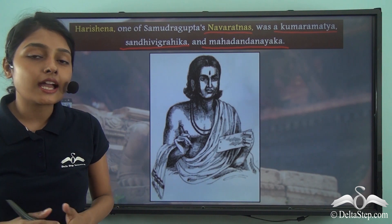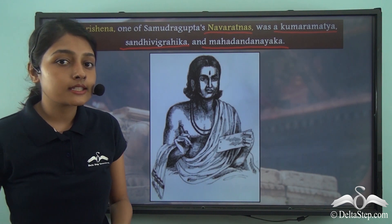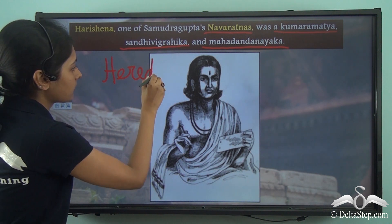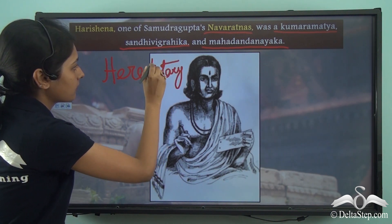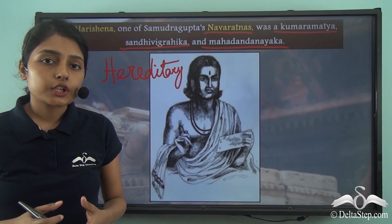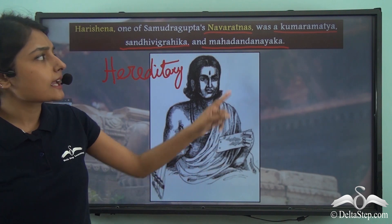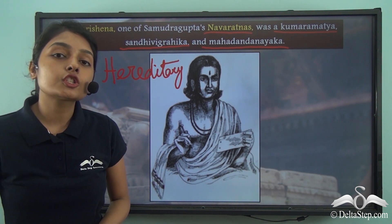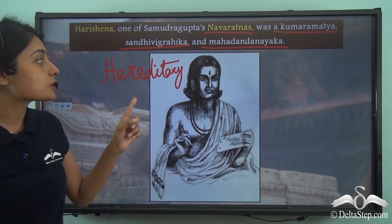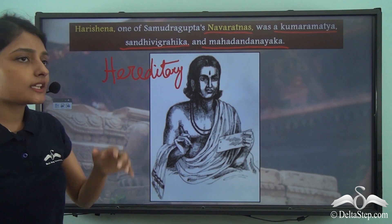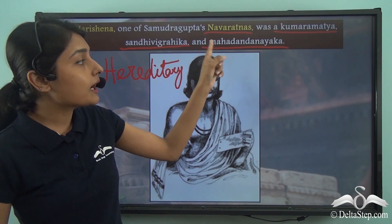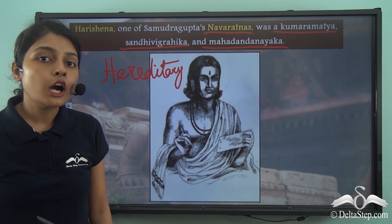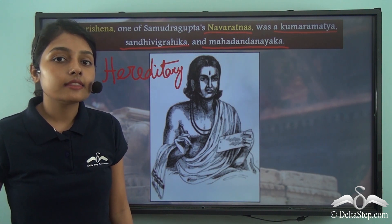An important point to note is that most of these offices were hereditary in nature. This means that when a person held any of these posts, it invariably meant that his son would also hold these posts. For example, Harishana's father, Drupavati, was Mahadandanayaka — so by birth, Harishana also became a Mahadandanayaka, or Chief Judicial Officer, in the Gupta administration.